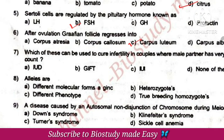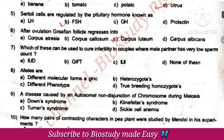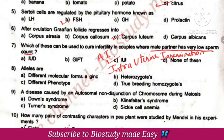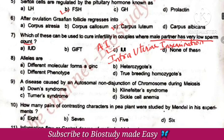Sertoli cells regulate pituitary harmony by FSH. After ovulation, the Graafian follicle becomes the corpus luteum. If the male partner has a very low sperm count, this means IUI — intrauterine insemination. AI and IUI is the answer.